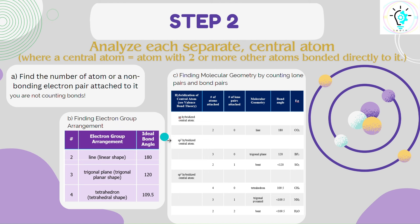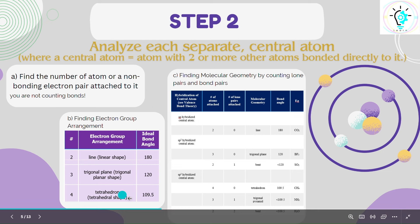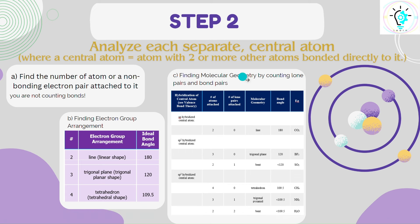The electron group arrangement can be linear when there are two attachments to the central atom. If there are three, it can be trigonal planar, and if there are four, it can be a tetrahedron. With each particular arrangement, the ideal bond angle is also determined. In the next step, we will determine the geometry by counting the number of lone pairs and bond pairs.